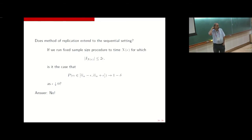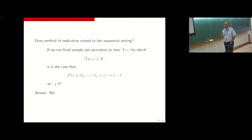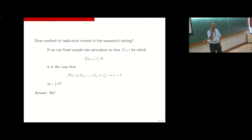Now you can ask: does this method of replication extend in an obvious way to the sequential setting? If we apply exactly the same idea as Chow and Robbins — run until the confidence interval half-width is less than or equal to epsilon — do we get asymptotically correct coverage? The answer, unfortunately, is no. You don't get the correct coverage when you apply this particular variant.